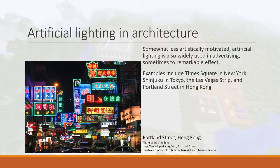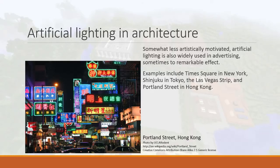Slightly less artistic and more commercial in nature: you might see a lot of neon signs in certain parts of the world. Most famously there's Times Square in New York, Shinjuku in Tokyo, the Las Vegas Strip, and Portland Street in Hong Kong, where artificial lighting is used extensively for marketing purposes. When the signs get this crowded, you have to wonder if anybody can actually see any signs anymore — there are signs covering other signs.